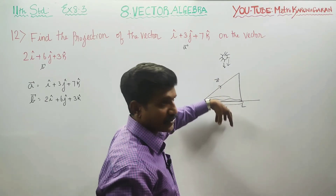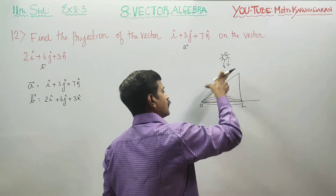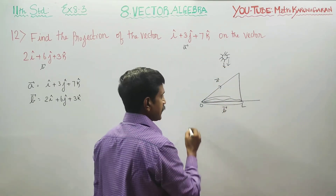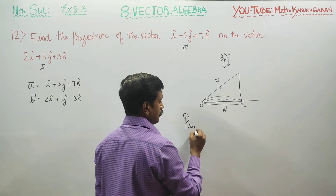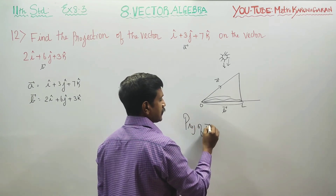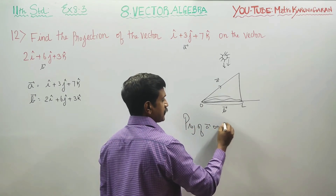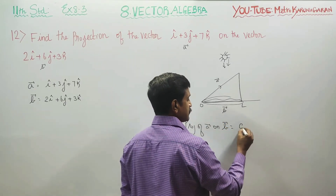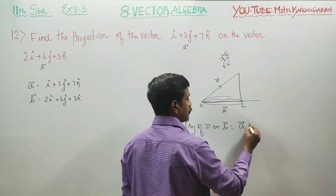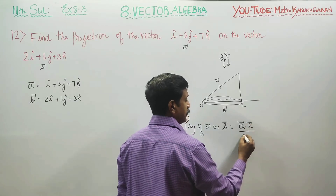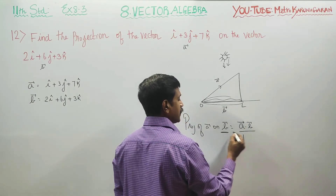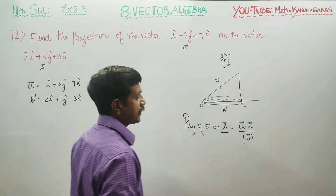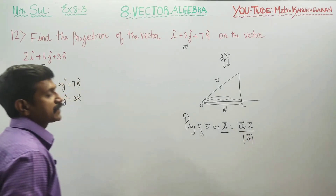You are projecting here. In vector terms, projection of A vector on B vector. The formula is: A vector dot B vector divided by the magnitude of B vector. That is A·B divided by |B|. This is the formula.